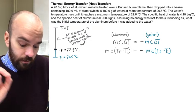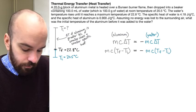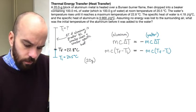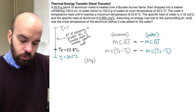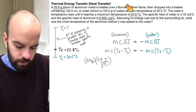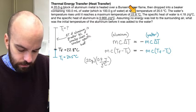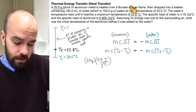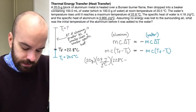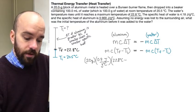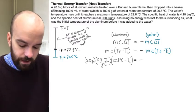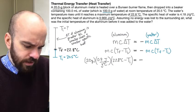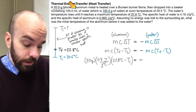The last thing we have to do is start substituting in values from the problem. We've got a 20 gram block of aluminum — that's the mass of aluminum. Its specific heat is 0.9 joules per gram degree Celsius. The final temperature is 22.8 degrees Celsius, which applies to both sides of the equation since both substances reach the same final temperature. The initial temperature of aluminum is what we're solving for, so we leave that as T_initial. On the right side, the mass of water is 100 grams — since the density of water is 1 g/mL, 100 milliliters equals 100 grams.